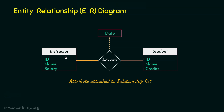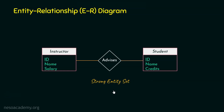Straight lines connect the entity or entity set with the relationship set. Now let's look at the strong entity set. The relationship uses a single diamond, so it is a strong relationship, and both entities use single rectangles — they are strong entity sets. When an entity has a primary key attribute, it is a strong entity set because it is not dependent on any other entity; the primary key identifies records uniquely. Both instructor and student have primary key attributes, so the relationship between them is a strong relationship.